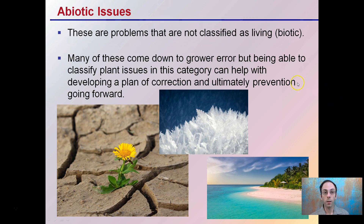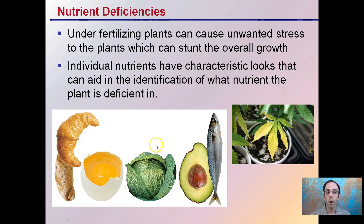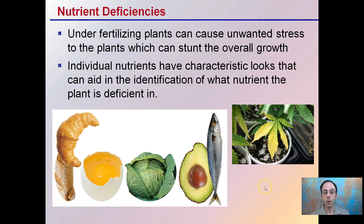These are important things. If you can classify them, this can help you going forward in avoiding mistakes in the future. There are also nutrient deficiencies — underfertilizing plants can cause unwanted stress and stunt their overall growth. Individual nutrients have characteristic looks that can aid in identification of what nutrient the plant is deficient in. Just because the leaves are yellowing or a certain color, it depends where they might be located, but that can help identify the nutrient, so a grower will know what to properly feed the plants to avoid that deficiency in the future.